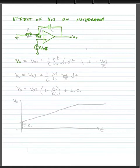We know that our output voltage VO equals VOS plus the voltage drop across the capacitor. The capacitor's voltage drop is 1 over C times the integral from 0 to T of the current I1 DT, where I1 equals VOS divided by R.